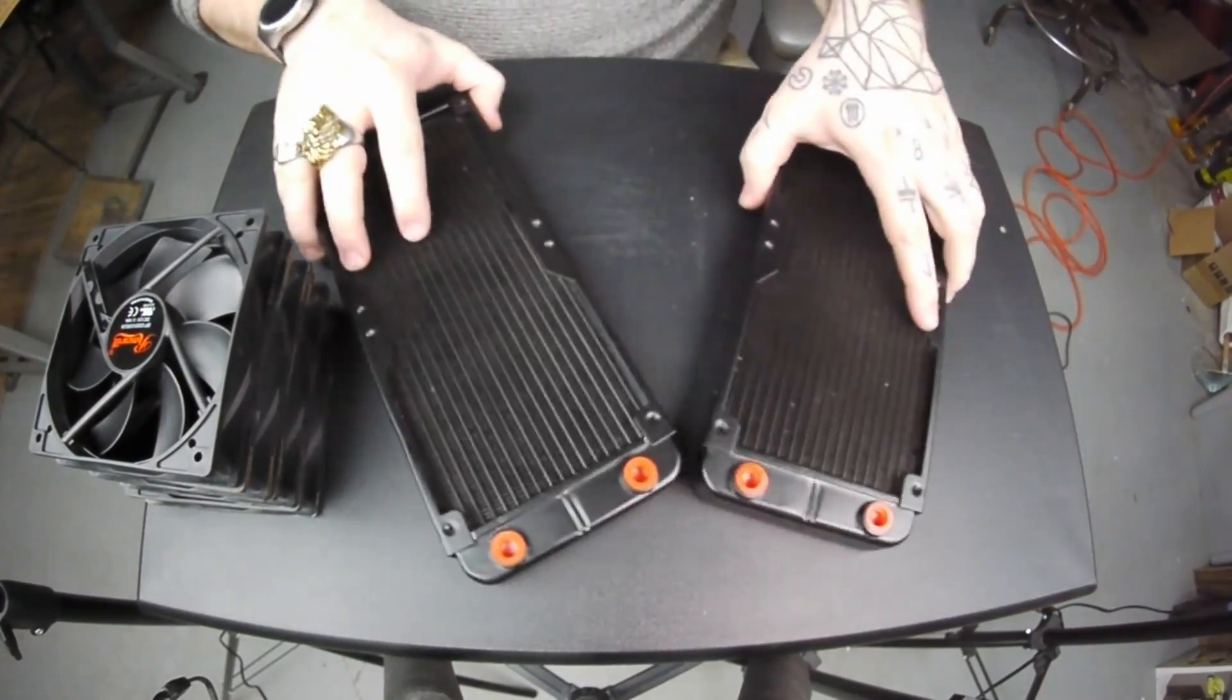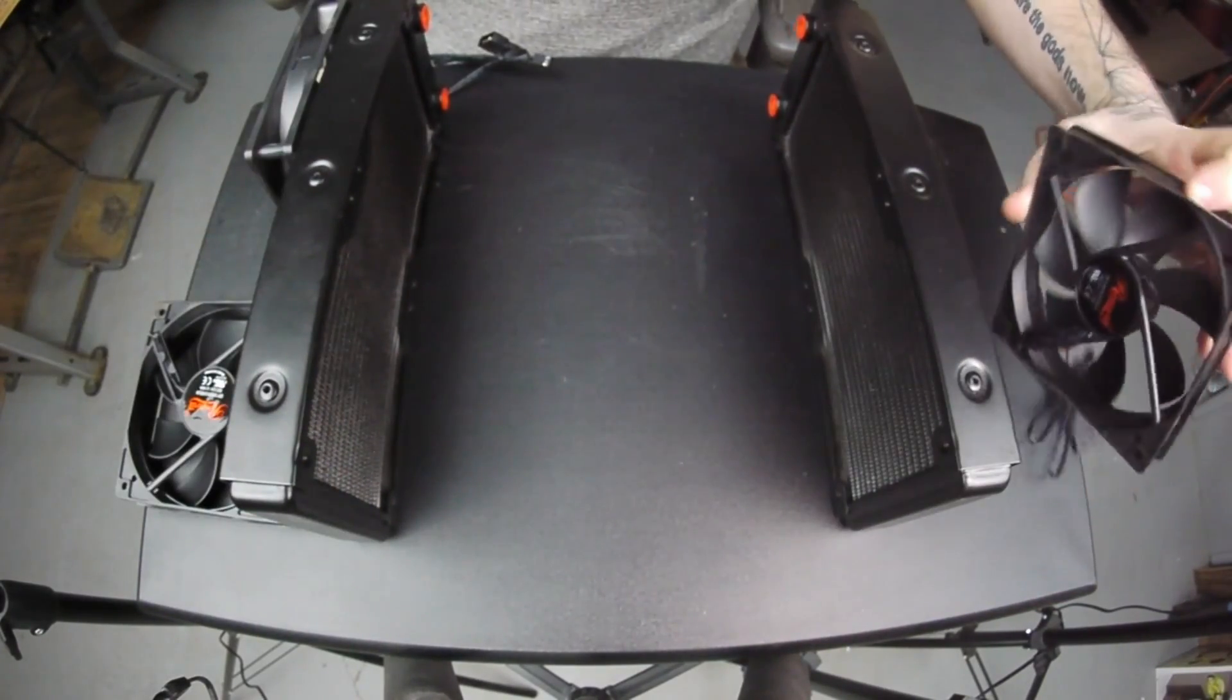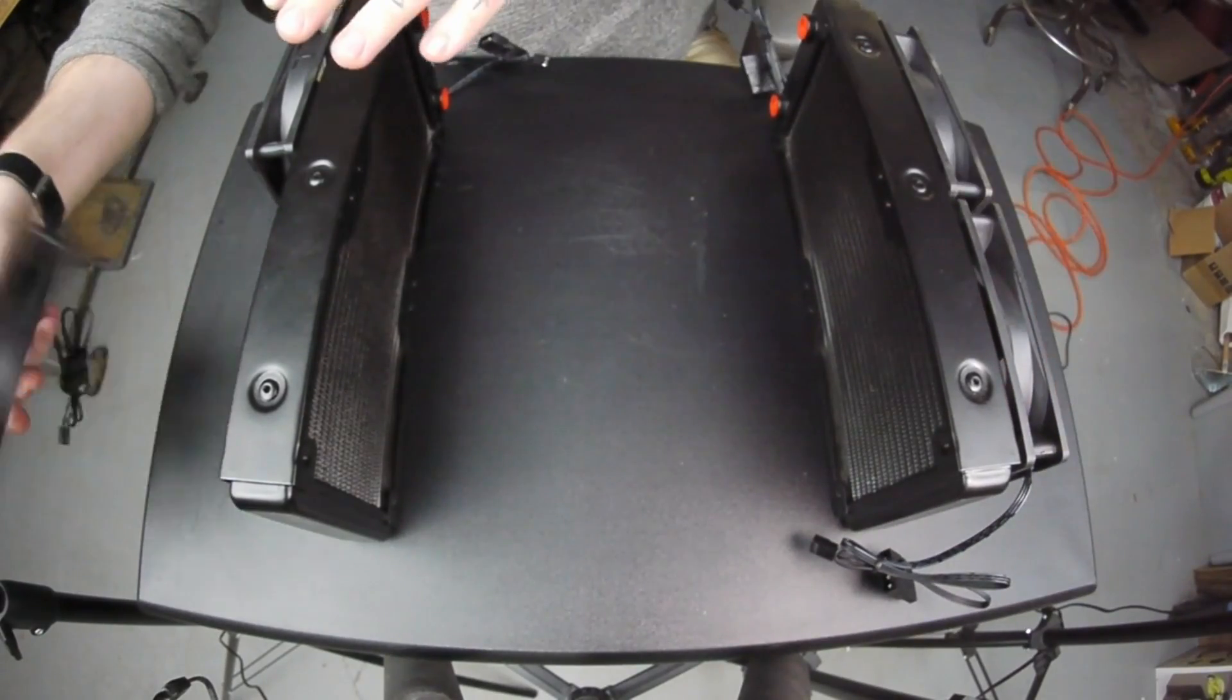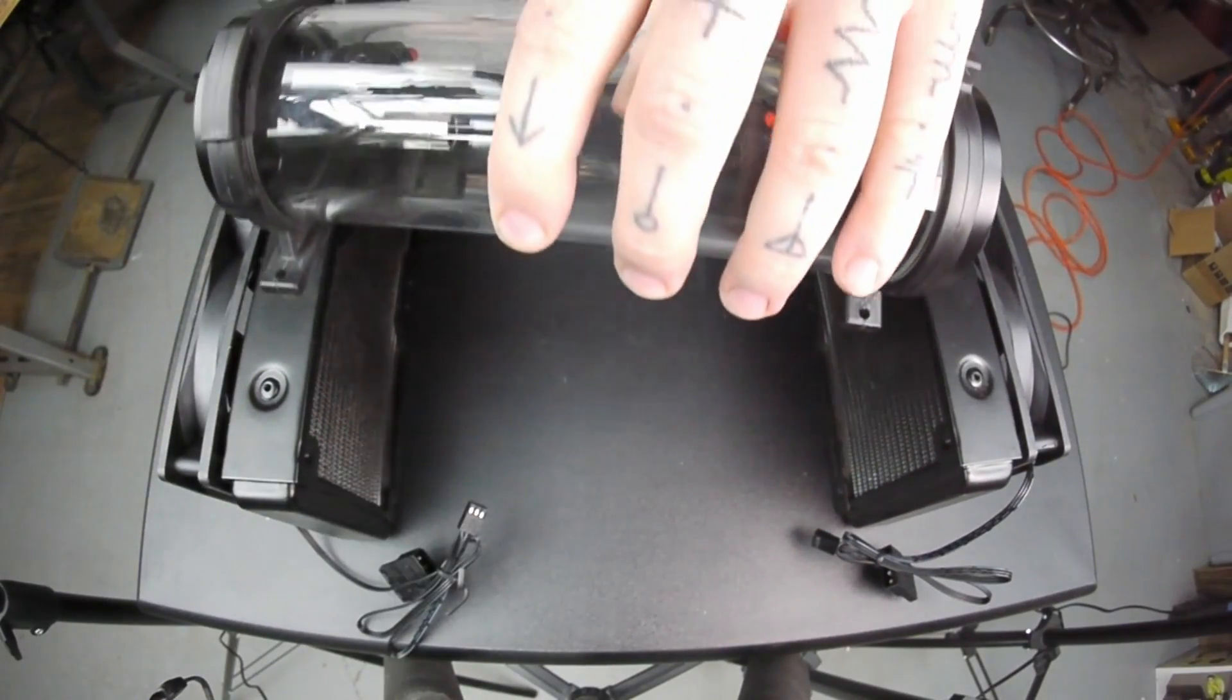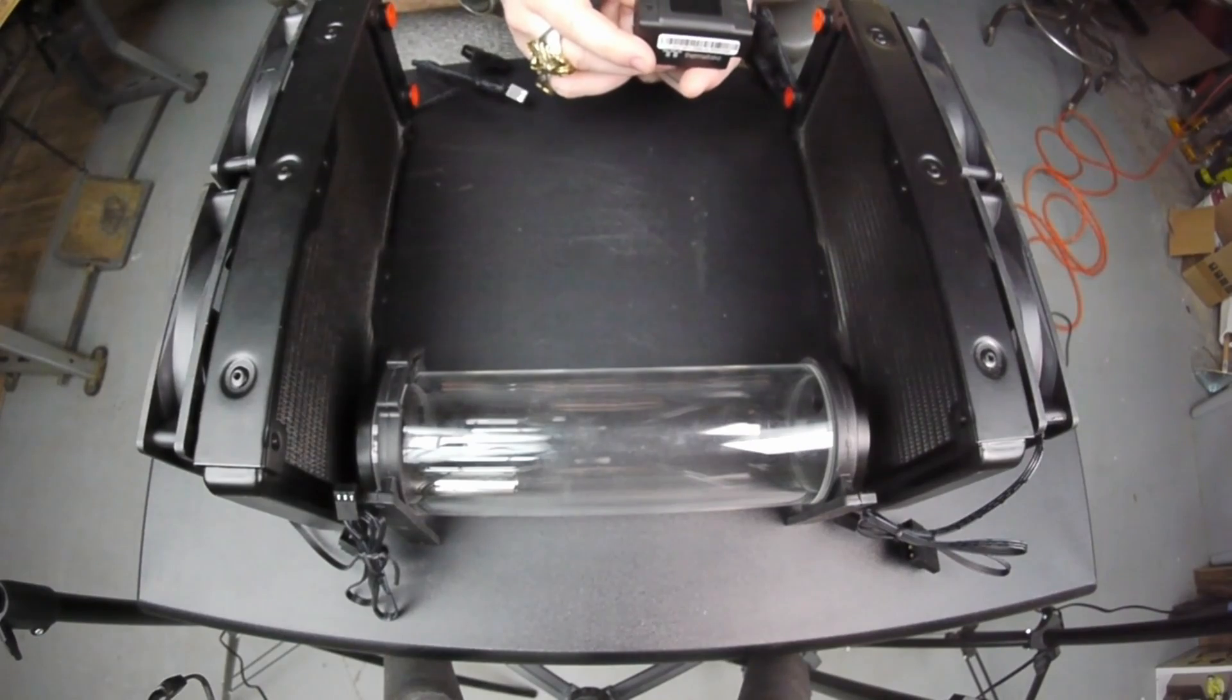The first thing I want to do is take all of the major components of this project and start laying them out on the table. I'm going to stack them, play with them, move them around, and see if I can figure out how I want this to go together in the end. The main thing I'm thinking about is how I'm going to actually run all of the tubing so that I have to make the fewest bends possible.